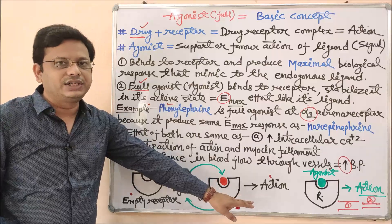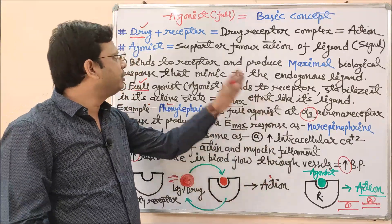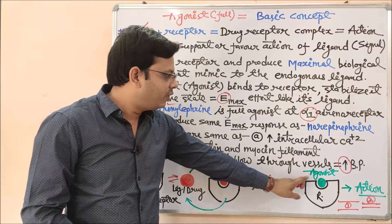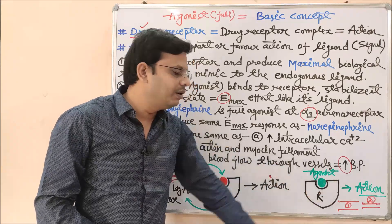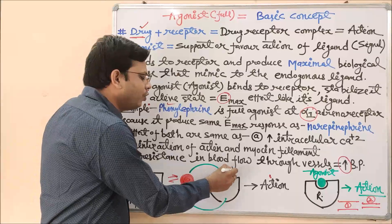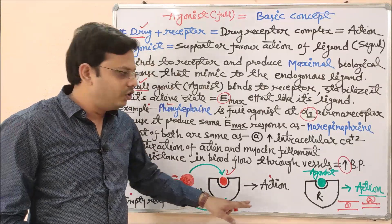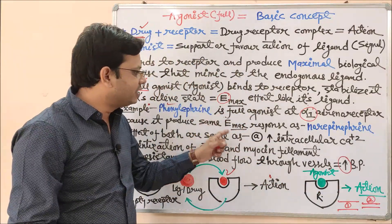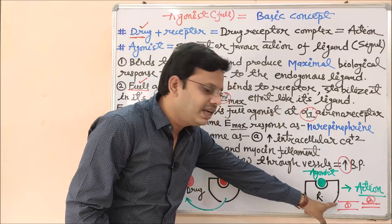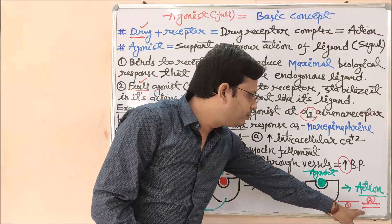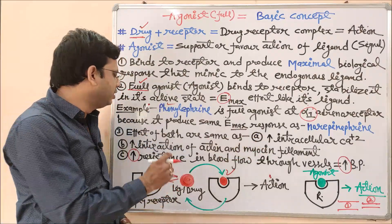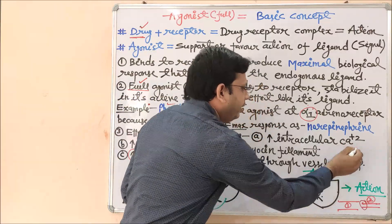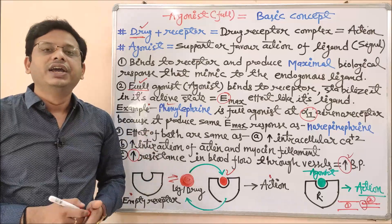This is a bidirectional step — the drug may go to the binding site and may also release from the binding site. Whenever it occupies the receptor, a drug-receptor complex forms and we get a biological response. In the case of an agonist specifically, the agonist will bind to the same binding site as the ligand molecule and produce the same biological response. There is no difference between the effect of the ligand molecule and the agonist molecule. As shown in the diagram, the blood vessel diameter decreases after intracellular calcium accumulation, actin-myosin interaction, and constriction — leading to increased blood pressure.